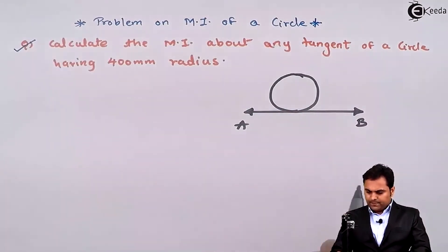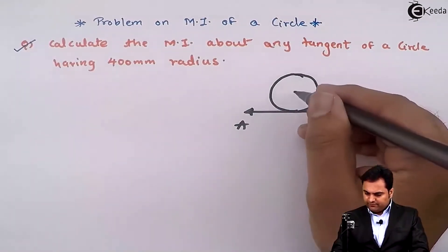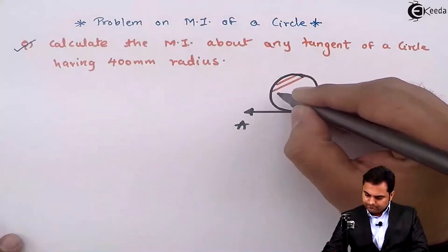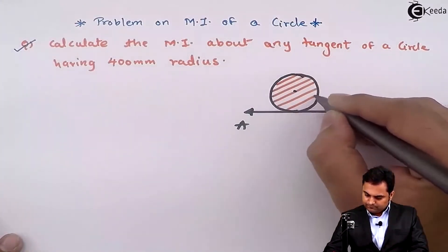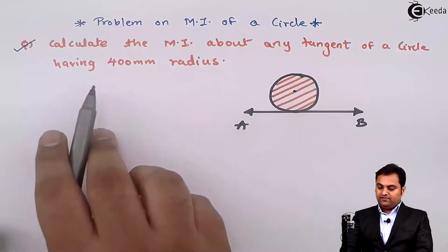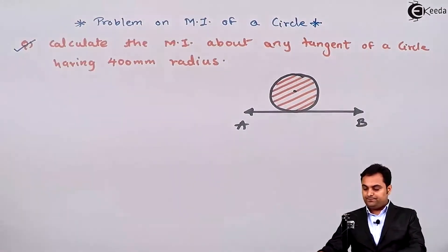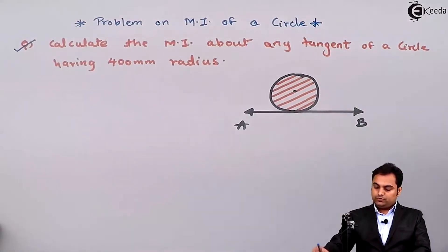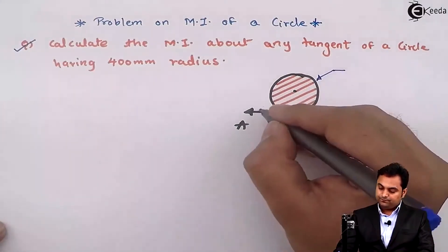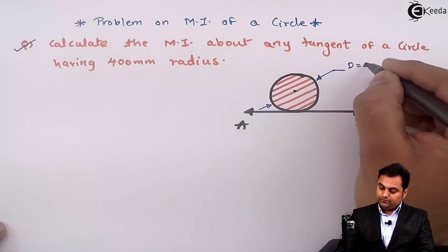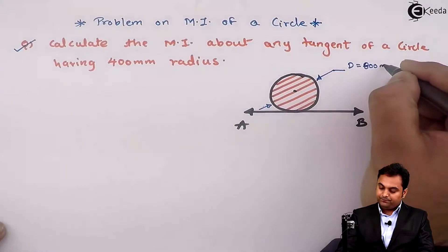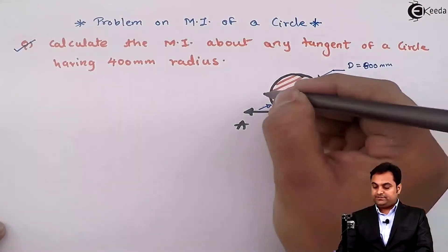Here we have a circle with radius 400 mm, so the diameter will be 800 mm.